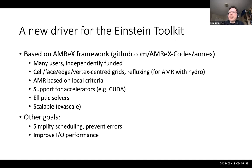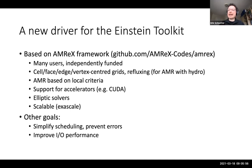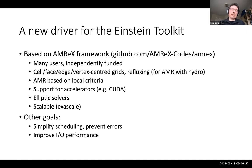Currently, people doing big hydro simulations don't like to have mesh refinement boundaries inside a star because it leads to large errors. The hope is that refluxing makes this possible because it has much less error at refinement boundaries when there's a shockwave going through. It supports AMR based on local criteria — you don't need to say where to put your boxes; rather, you say which error each cell has, and AMREX refines or doesn't refine based on a threshold. It has support for accelerators like CUDA, elliptic solvers built in, and AMREX is scalable — it supports exascale, which is what the X in AMREX is about.